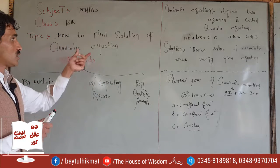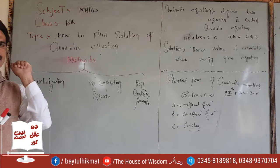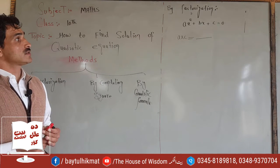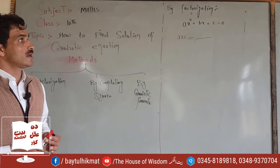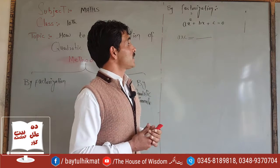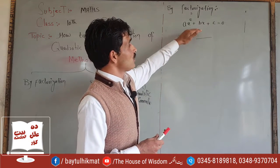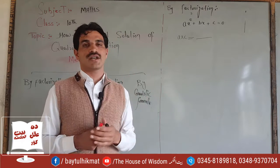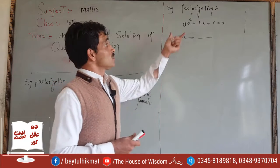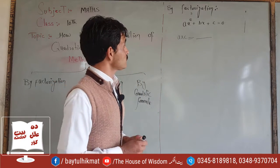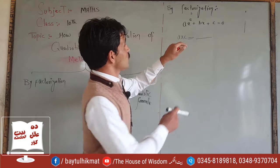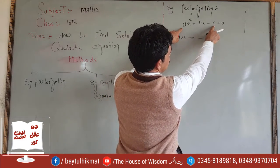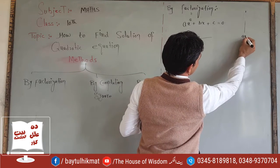To find the quadratic equation solution, we use the factorization method. In this method, we work on logic to get the two solutions. The first procedure is to convert to the standard form of a quadratic equation. Then we perform factorization.